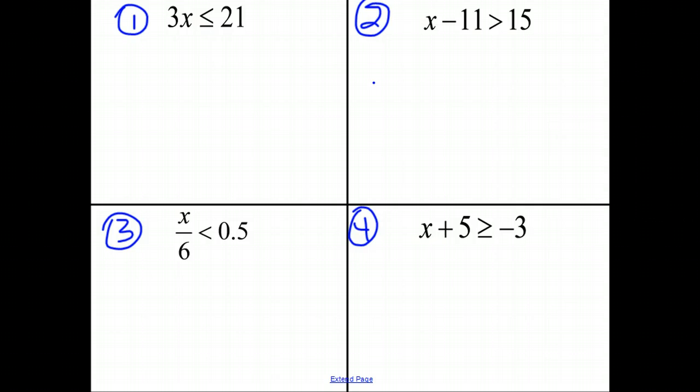So for number 1, we are multiplying by 3. So to undo the multiplication, we divide by 3. After we divide by 3, 3 divided by 3 is 1, so we are just left with 1x. x is less than or equal to 21 divided by 3 is 7. x is less than or equal to 7.